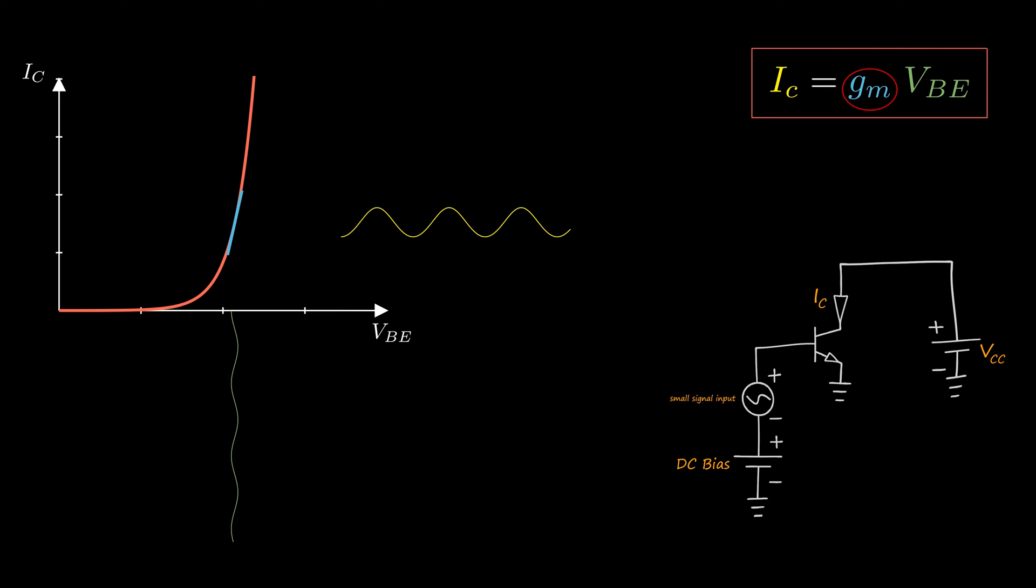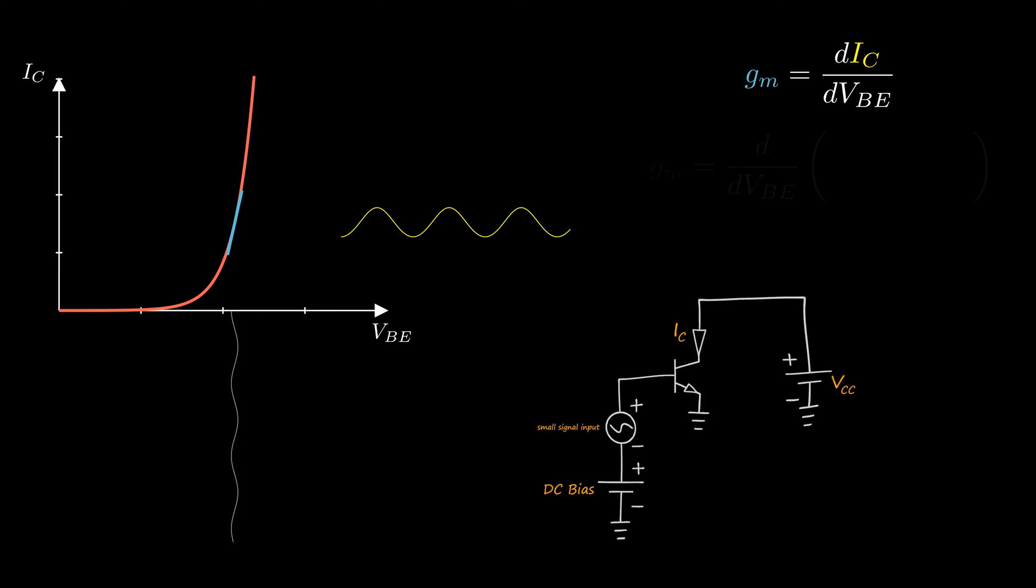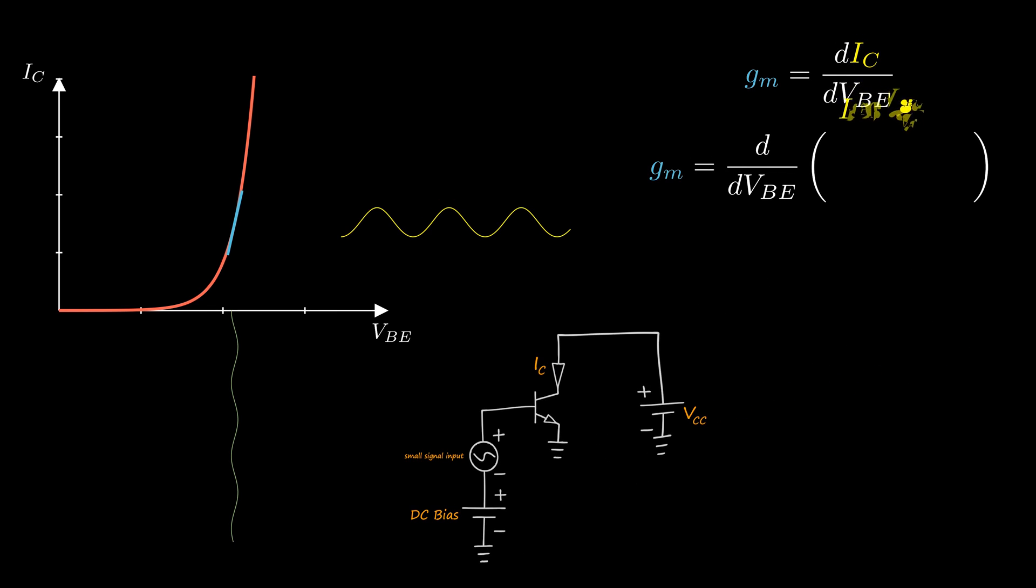Transconductance represents the strength of the device in converting voltage to current, or the derivative of the collector current versus VBE. Since collector current is changing exponentially, the derivative is also exponential. So transconductance of BJT depends on the collector current.